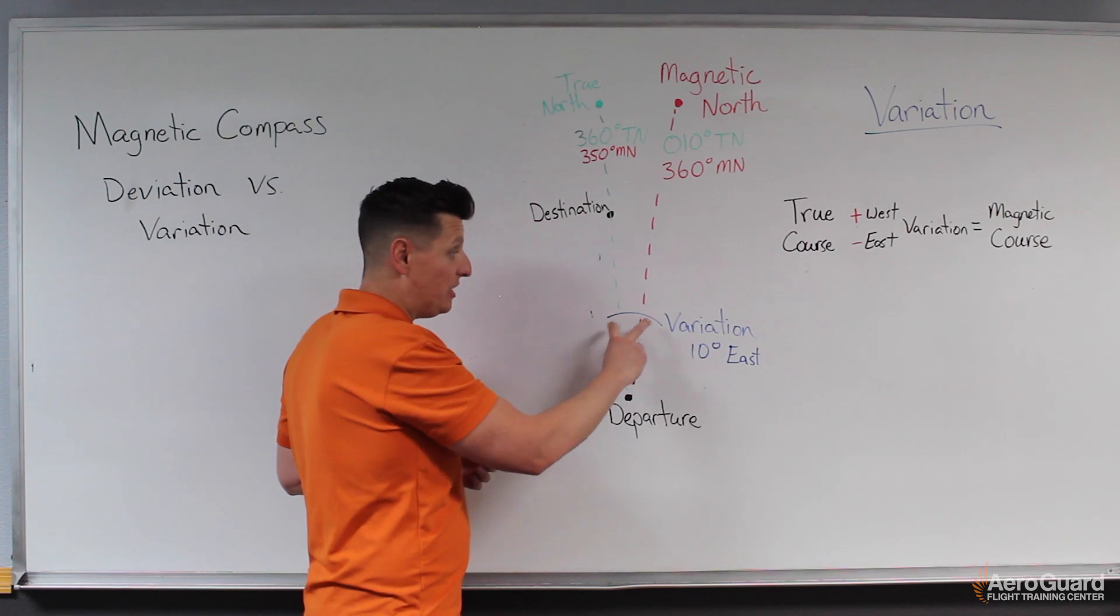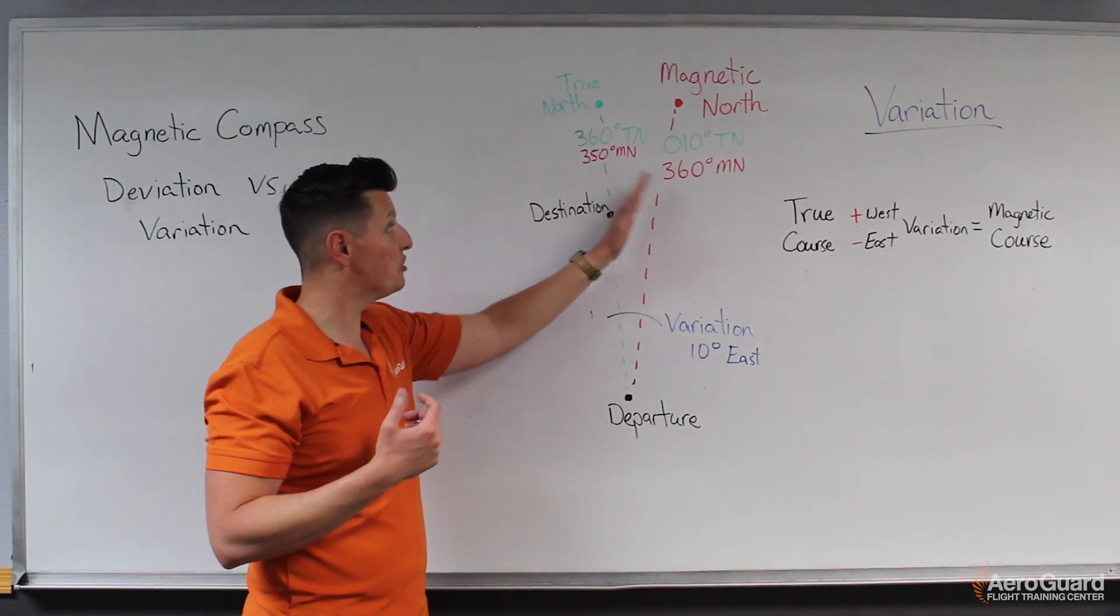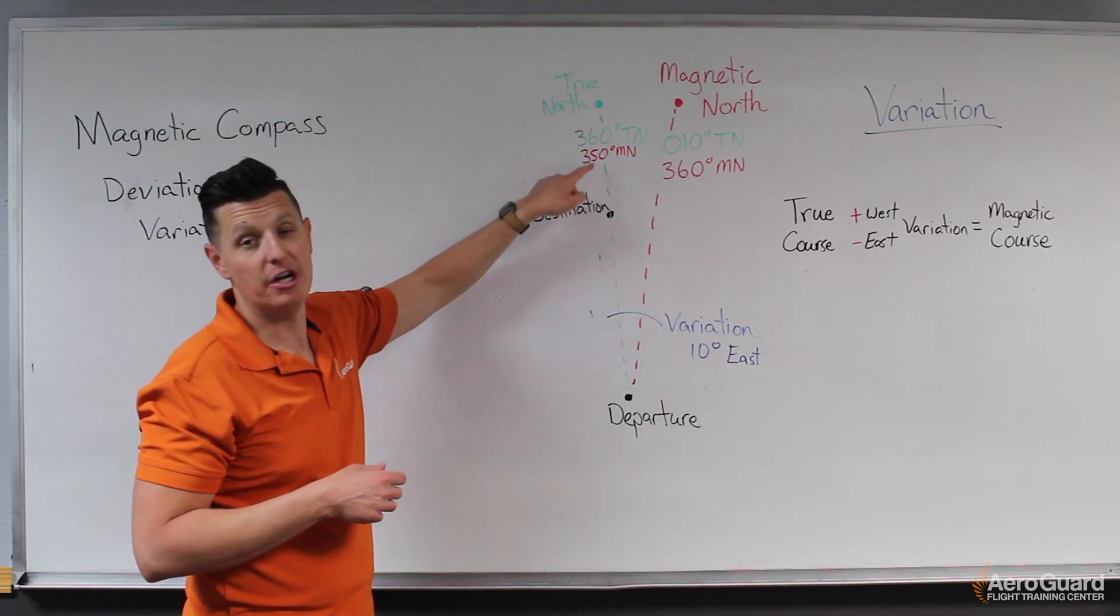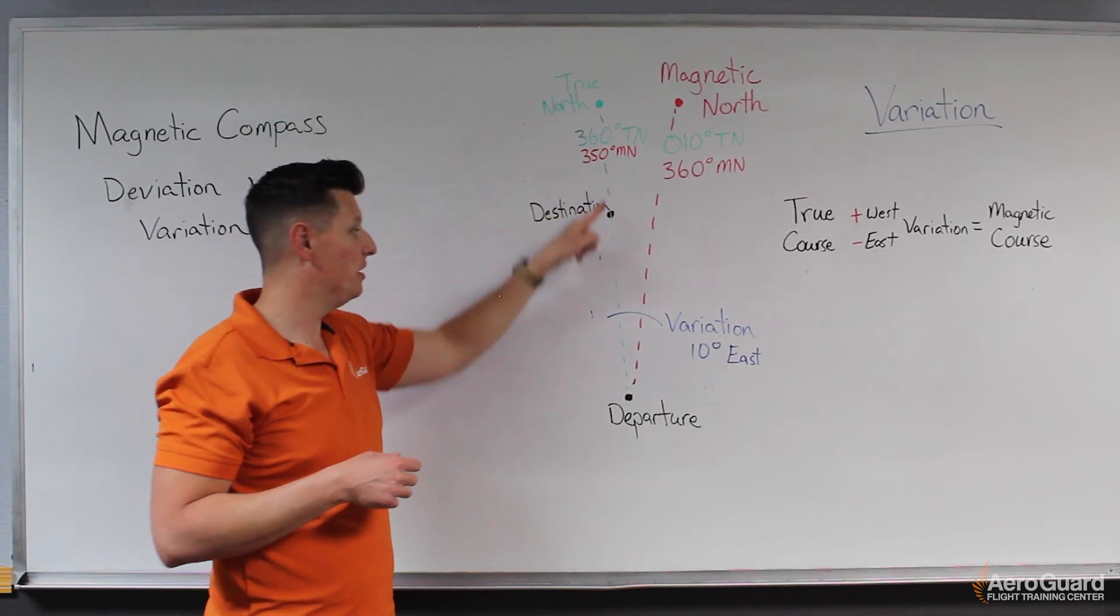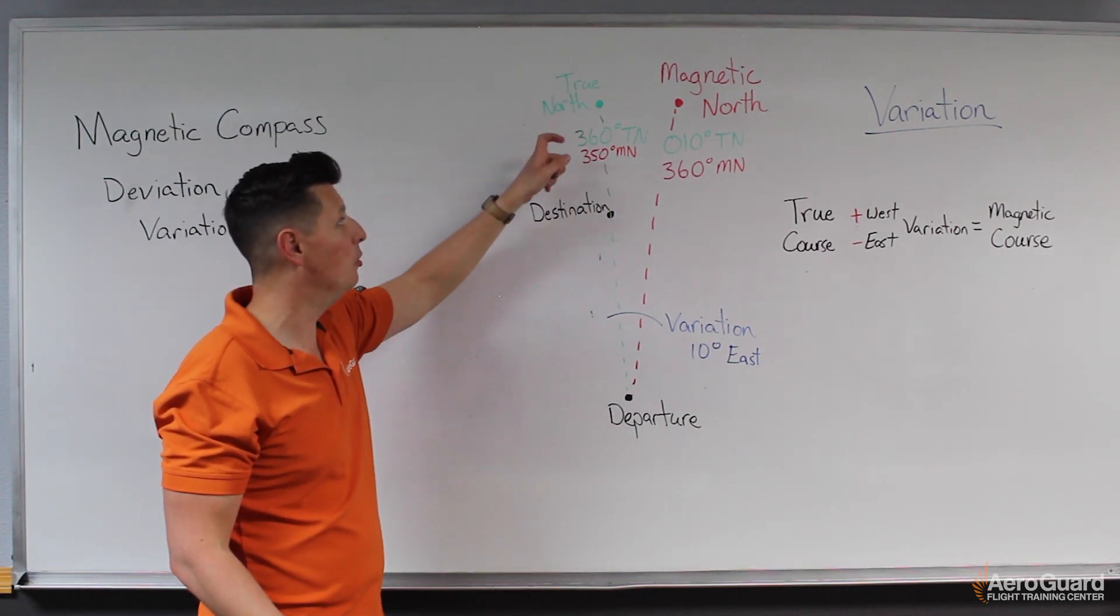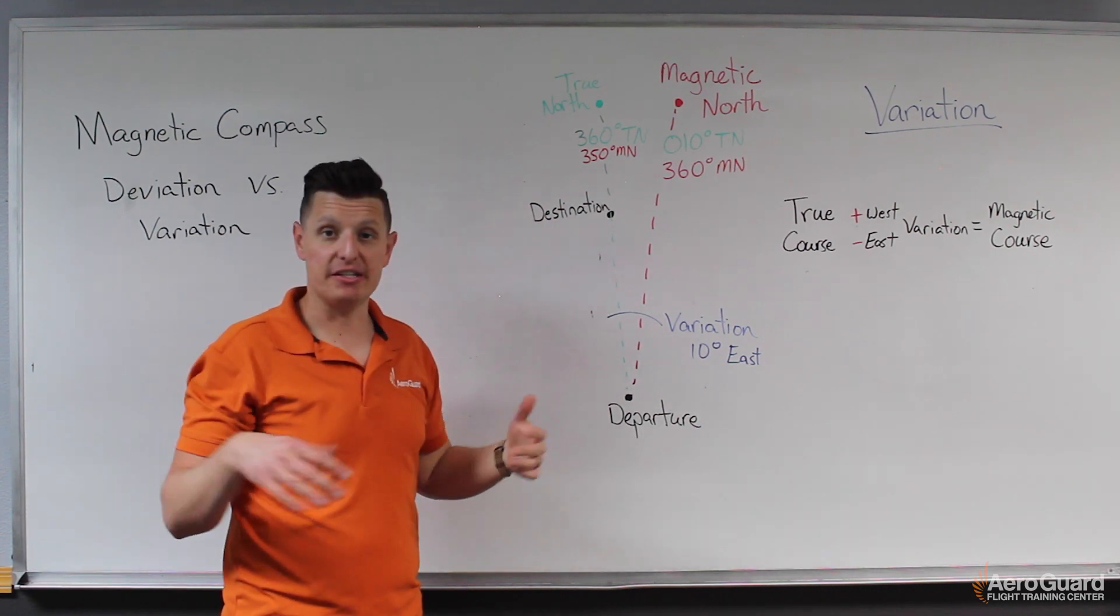If that variation is 10 degrees, then we're simply just going to, in this case, subtract those 10 degrees. So we know if we flew a magnetic course of 350 degrees, that's the same or equivalent in this example to flying the true course of 360 degrees.